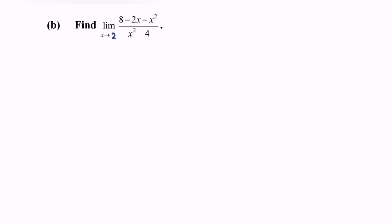First, substitute the value 2 into the function. We get negative 4 minus 4, which gives negative 8, so the numerator becomes 0. For the denominator, substituting 2 gives 4 minus 4, which is also 0. So this is the indeterminate form.